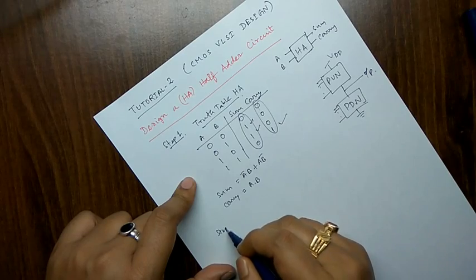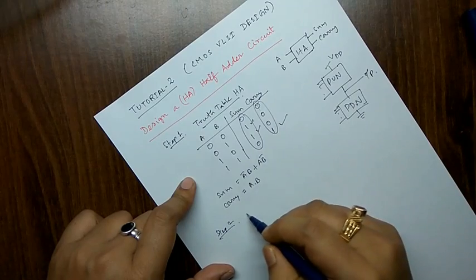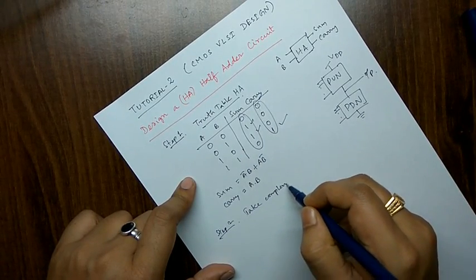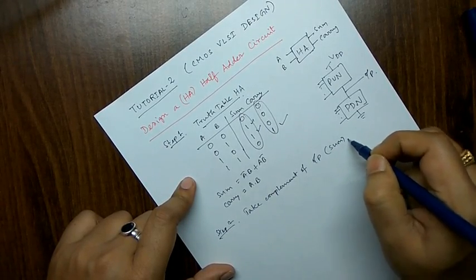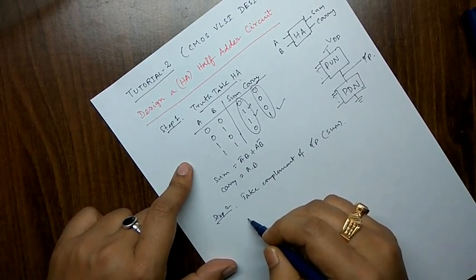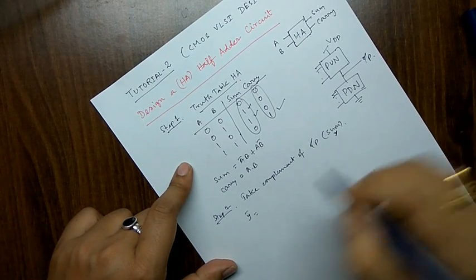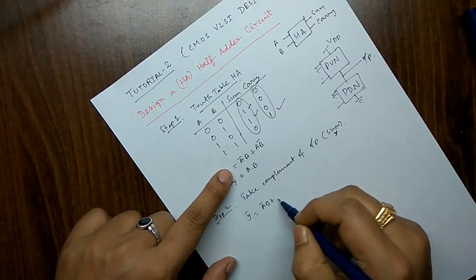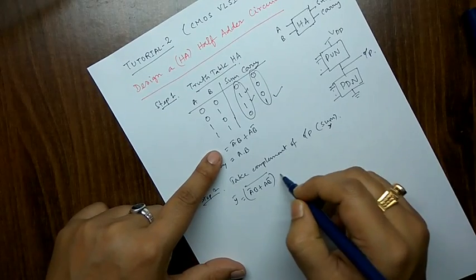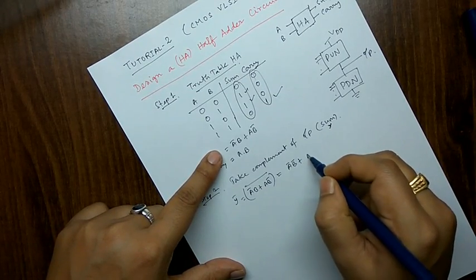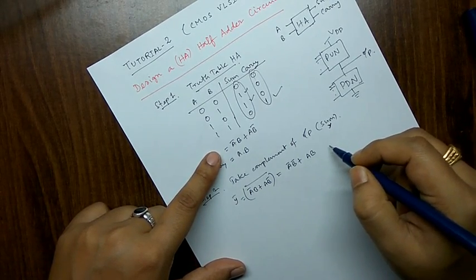The second step is we have to take the complement of the output. So if we take the complement of sum, which is Y, then Y-bar = (A-bar·B + A·B-bar)-bar. Applying De Morgan's law, this becomes A-bar·B-bar + A·B, following the basic rules and postulates of digital electronics.